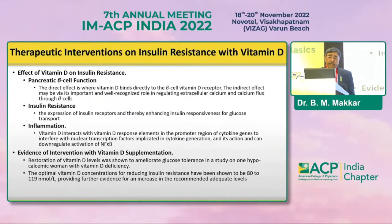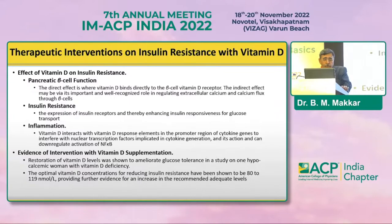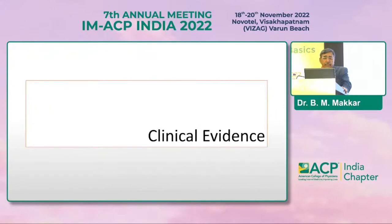Vitamin D deficiency has a direct impact on beta cell function and directly increases insulin resistance by decreasing receptor expression and PPAR-delta expression at peripheral tissues. It also increases the pro-inflammatory state which further worsens insulin resistance. Studies have shown that vitamin D supplementation correcting vitamin D deficiency improves glucose homeostasis and insulin resistance. To improve insulin resistance, vitamin D levels of 80 to 120 nanograms per ml have been shown to be beneficial.